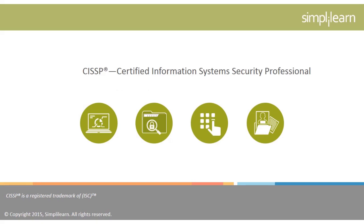CISSP was the first credential in the field of information to meet the stringent requirements of ISO/IEC Standard 17024. CISSP is an objective measure of excellence and a globally recognized standard of achievement. In June 2004, the CISSP became the first information security credential accredited by ANSI ISO/IEC Standard 17024:2003 accreditation.